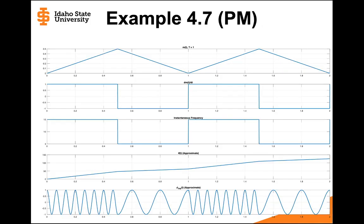Comparing all graphs at once: for the phase modulated signal, one possible message is the triangle wave — the integral of the given derivative. The instantaneous frequency constantly jumps between 15 Hz and 5 Hz with no other values, and this is reflected in the PM signal alternating between being bunched up (15 Hz) and spread out (5 Hz). The angle graph similarly shows only two slopes — steeper from 0 to 0.5 where frequency is 15 Hz, flatter from 0.5 to 1 where frequency is 5 Hz, then repeating.